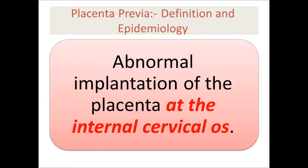Placenta previa is defined as an abnormal implantation of the placenta at the internal cervical os. Normally, the placenta is implanted in the upper part of the uterus near the fundus. In a few percent of pregnancies, the placenta implants in the lower uterine segment. This condition affects about 0.5% of all pregnancies and is the second most common cause of antepartum hemorrhage, responsible for 20% of cases, coming next to placental abruption.